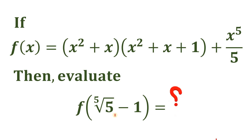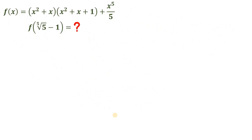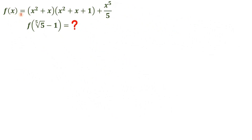And if you're done, post your answer in the comment section down below. Now let's see if you got the correct answer. The question here is: given f of x, which is equivalent to x squared plus x, multiplied by the quantity x squared plus x plus 1, plus x raised to the 5th power over 5, our goal is simply to evaluate the function where x equals the 5th root of 5 minus 1.